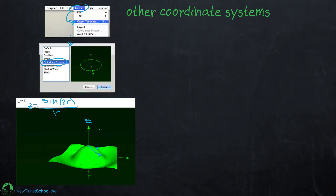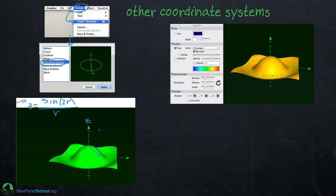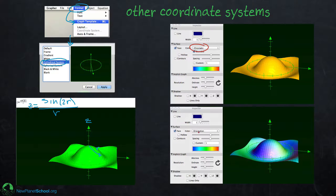Once you have a surface, you can click on it, go into the Inspector, and customize it. You can select different color options — for example, chromatic, or one called orientation. Surfaces can be customized just like any of the others.